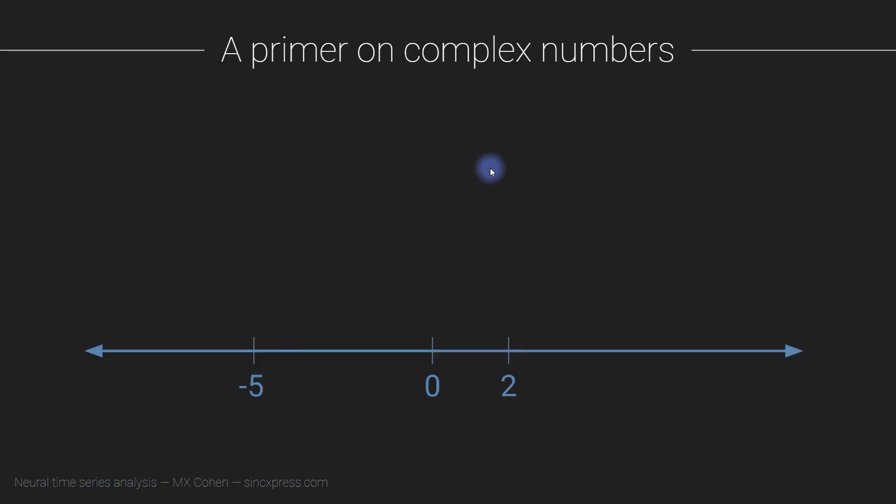So let me start by showing you the real number line. This is the number line that you are used to seeing basically your whole life. So we have 0 in the middle, the negative numbers to the left, and the positive numbers to the right. So all the numbers that you are typically used to working with, certainly in practical day-to-day life, is on this line.